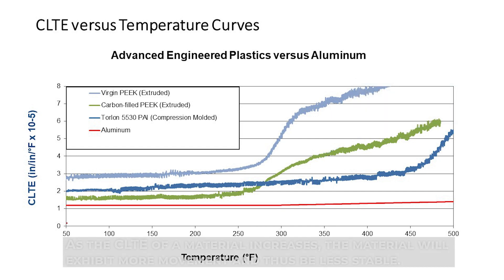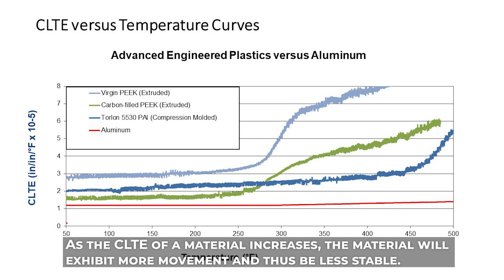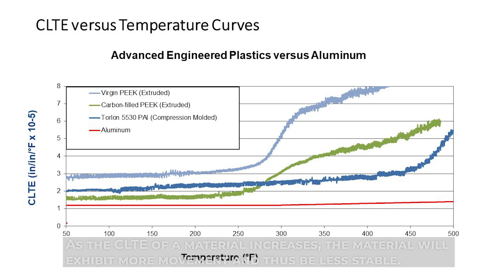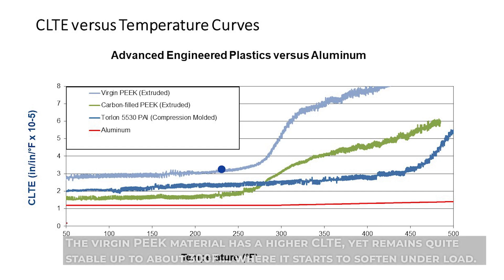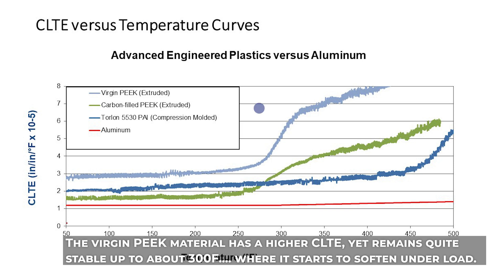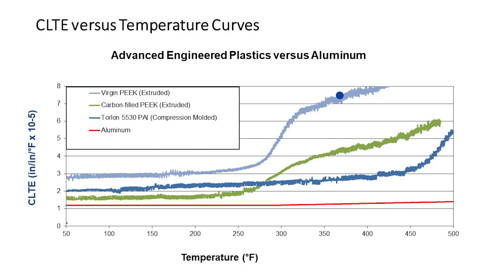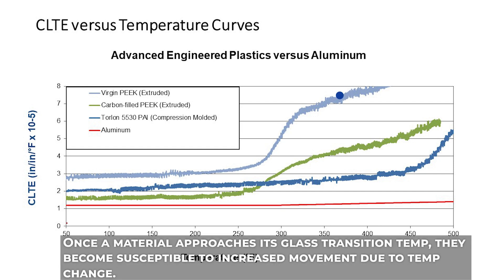In other words, as the CLTE of the material increases, the material will exhibit more movement and thus be less stable. The aluminum is of course very stable across this temperature range and shows a very consistent CLTE. The virgin PEEK material has a higher CLTE yet remains quite stable up to about 300 degrees Fahrenheit, at which point it starts to soften under load and the CLTE really starts to climb.